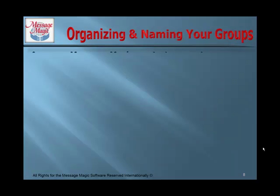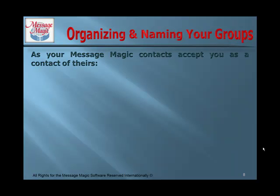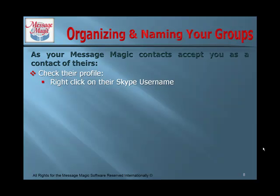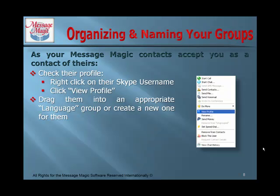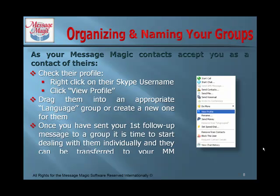Here are the steps to follow as your MessageMagic contacts accept you. First, check their profile — right-click on their Skype username and view their profile. There you will see what language they speak if they put it in their profile. If so, drag them into an appropriate language group or create a new one for them. Once you have sent your first follow-up message to a group, it is time to start dealing with them individually and they can be transferred to your MessageMagic communicating group.